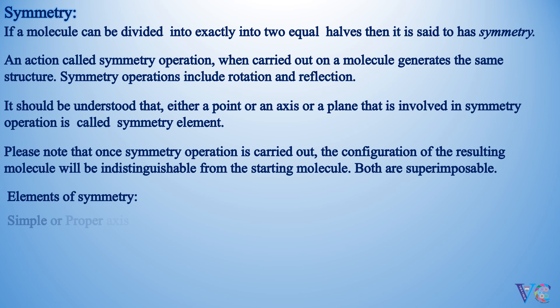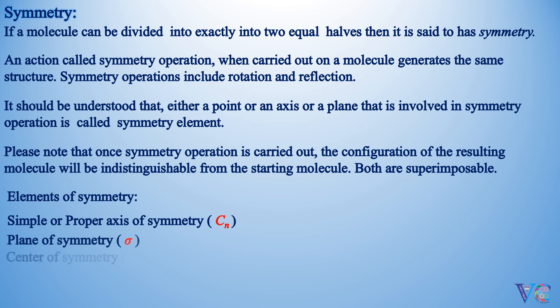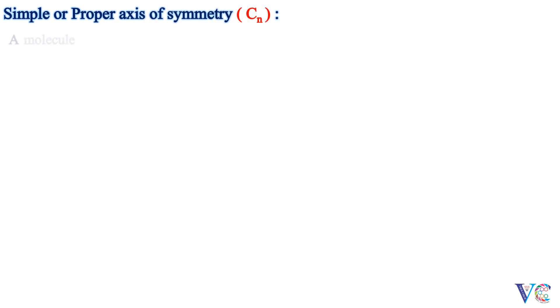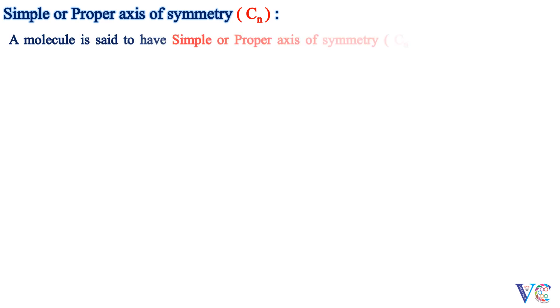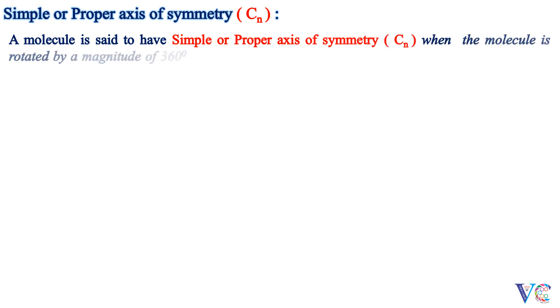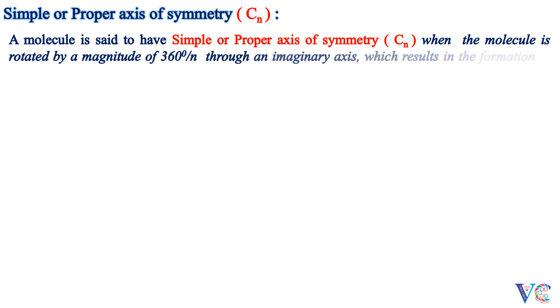Simple or proper axis of symmetry — a molecule is said to have a simple or proper axis of symmetry when the molecule is rotated by a magnitude of 360 degrees divided by n through an imaginary axis, which results in the formation of an indistinguishable structure when compared to the original molecule.